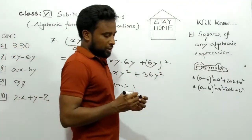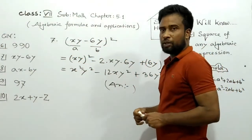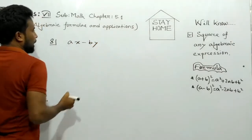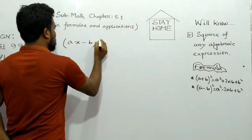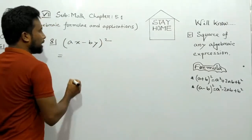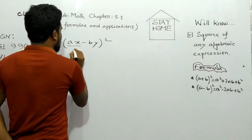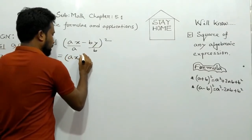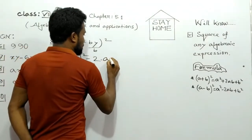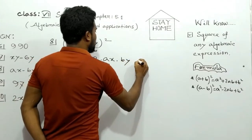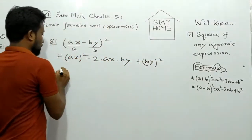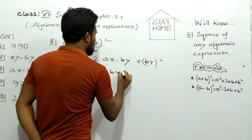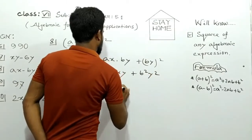Our next expression is number 8: (ax - by)². We apply the (a - b)² formula, where ax is 'a' and by is 'b'. So: a² - 2ab + b² gives us a²x² - 2abxy + b²y². This is our answer.